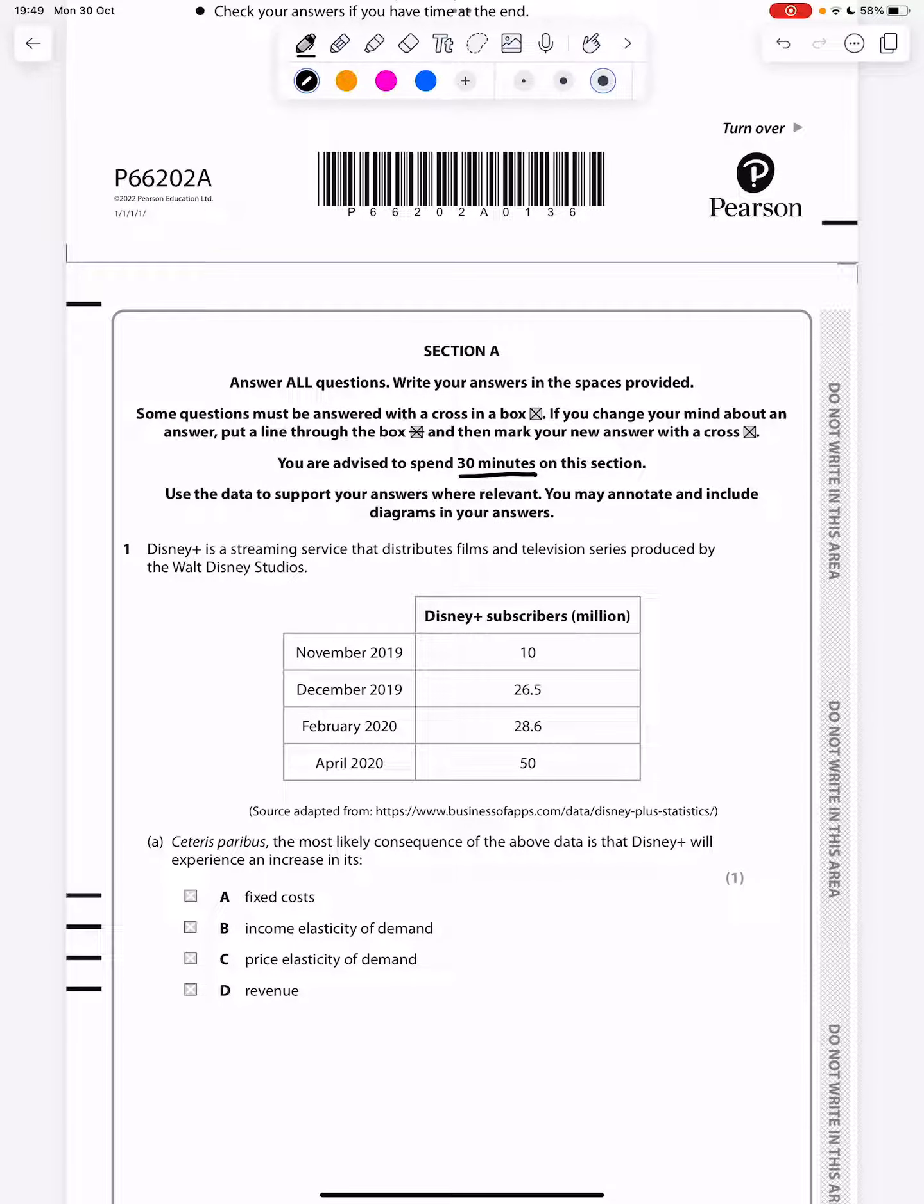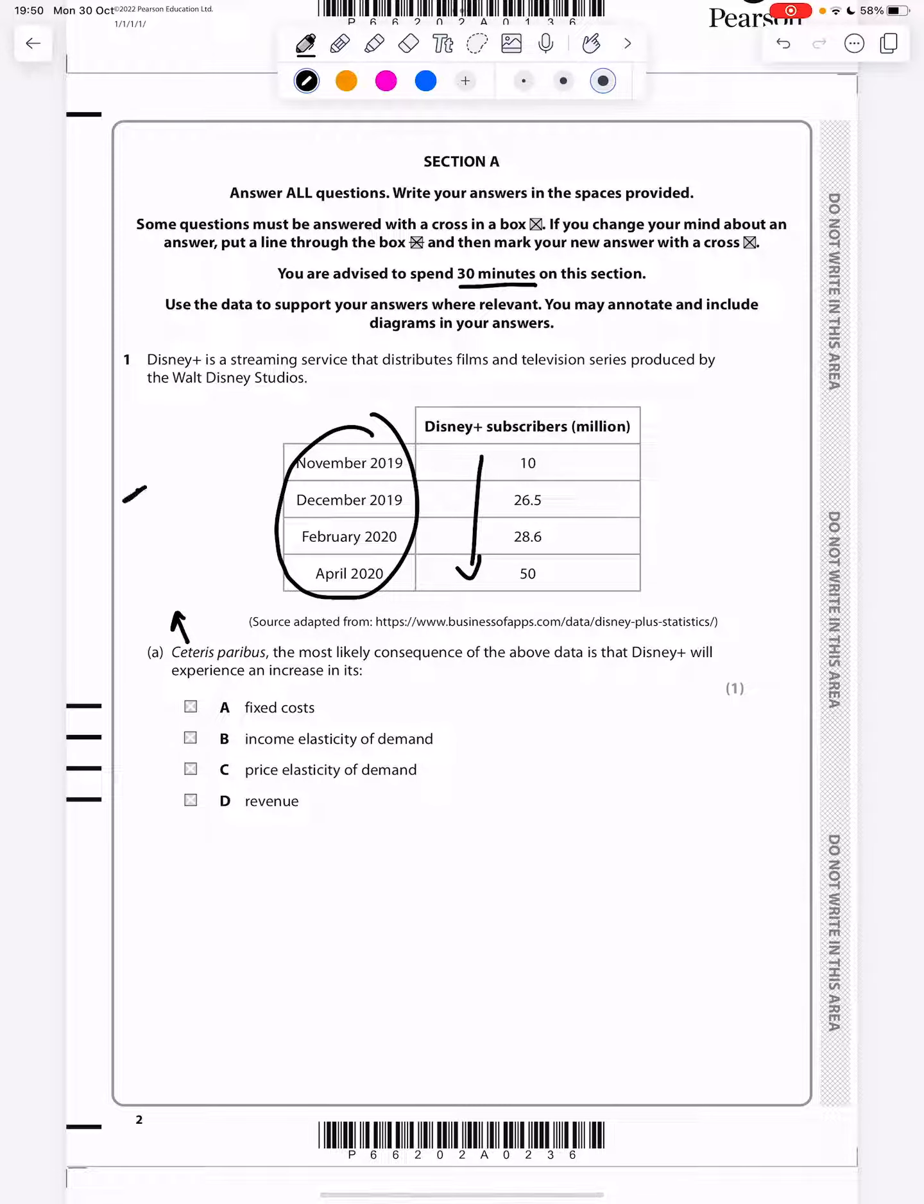Question one: Disney Plus is a streaming service that distributes films and television series. We can see subscribers increasing from November to April 2020. Ceteris Paribus, which means all other things remain equal. The most likely consequence is that Disney Plus will experience an increase in revenue. You've got more subscribers paying the fee, so you're making more revenue as long as you're not reducing your price, and we know they're not because it says ceteris paribus.